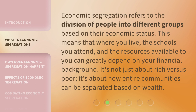Economic segregation refers to the division of people into different groups based on their economic status. This means that where you live, the schools you attend, and the resources available to you can greatly depend on your financial background. It's not just about rich versus poor — it's about how entire communities can be separated based on wealth.